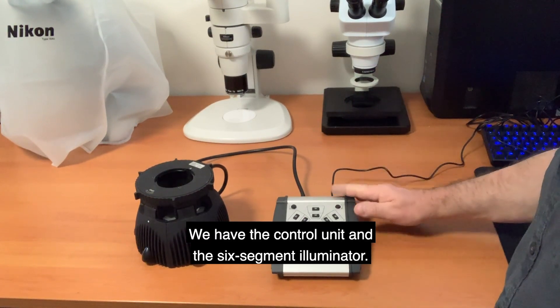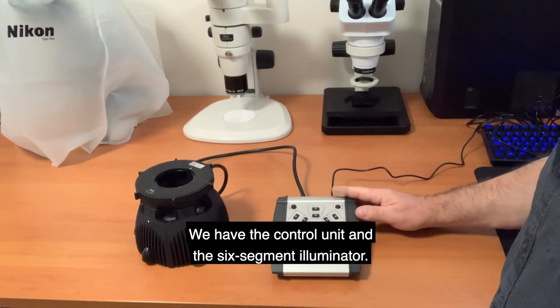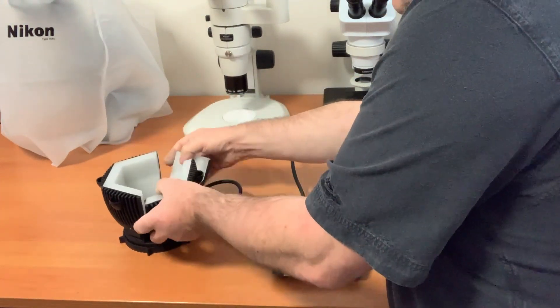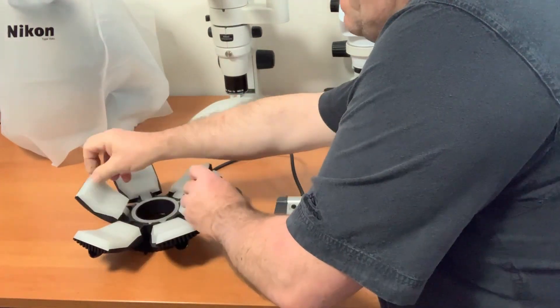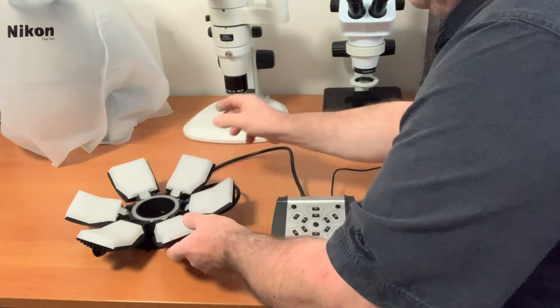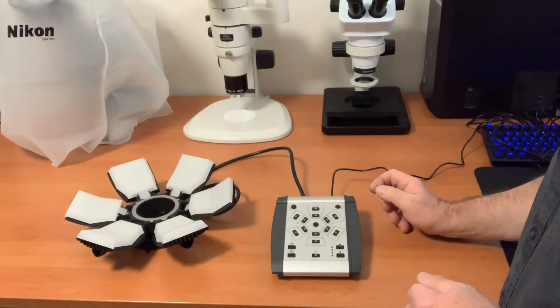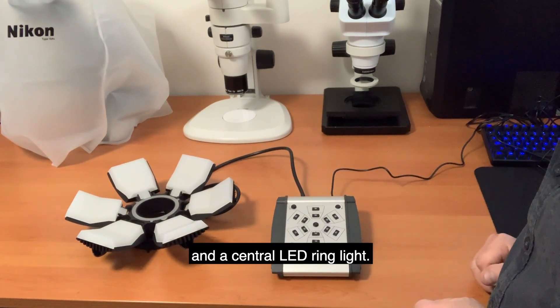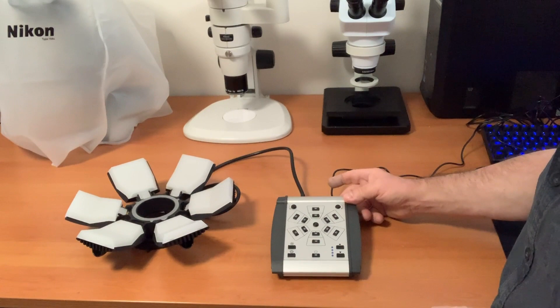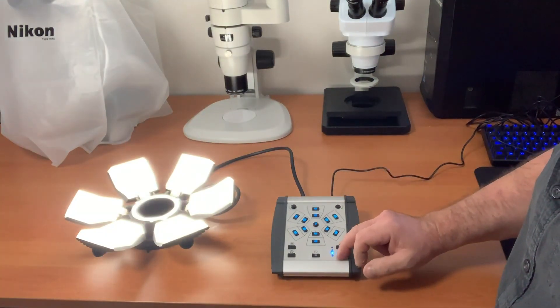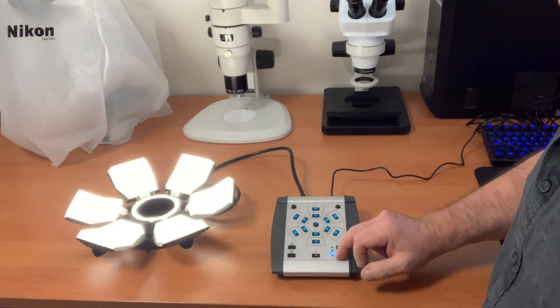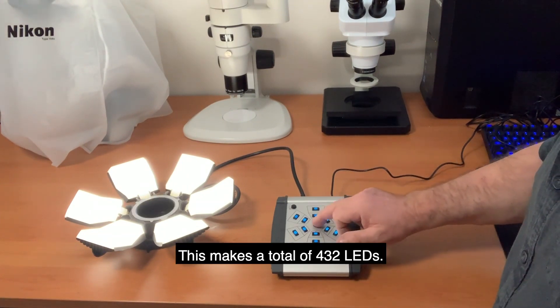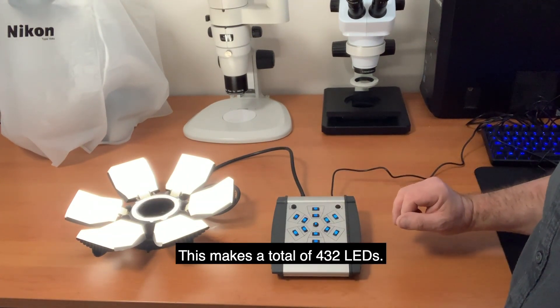We have the control unit and the six segment illuminator. There are six tilting arms, each with 68 LEDs and a central LED ring light. This makes a total of 432 LEDs.